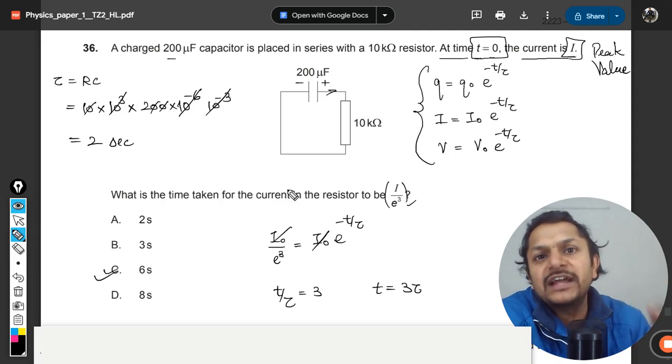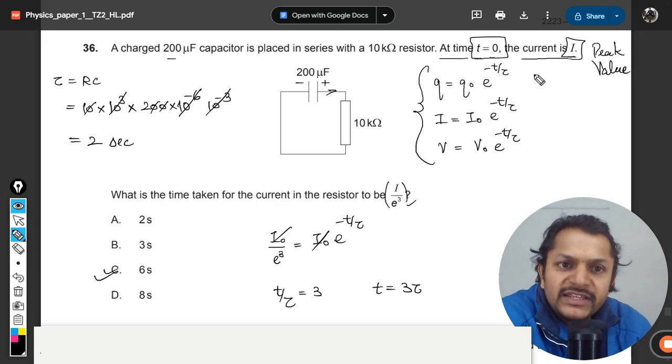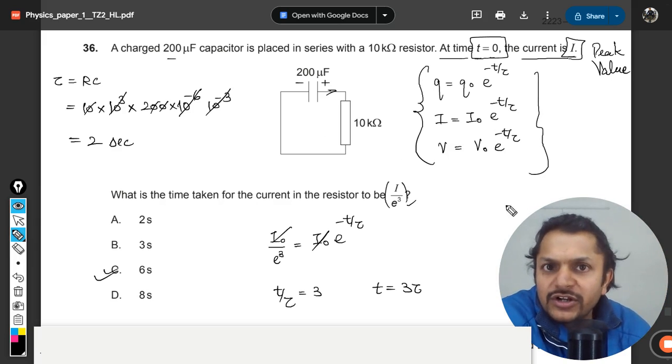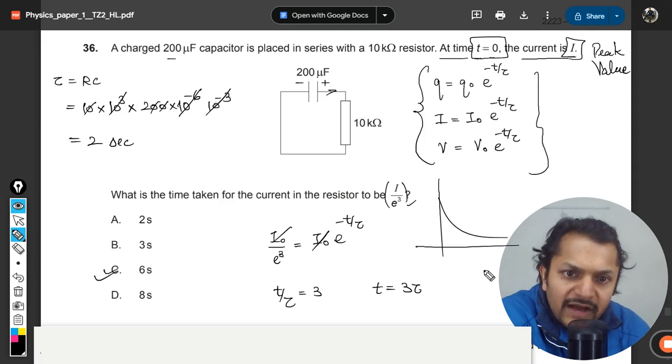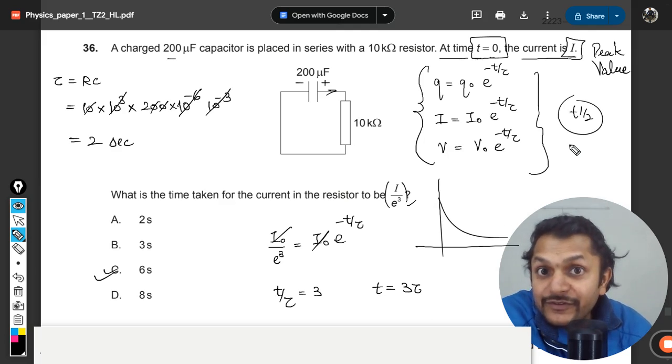Quite simple - plug in the value, get the answer. This is completely an exponential curve. The graphs are like this, and it does have a concept of half-life.